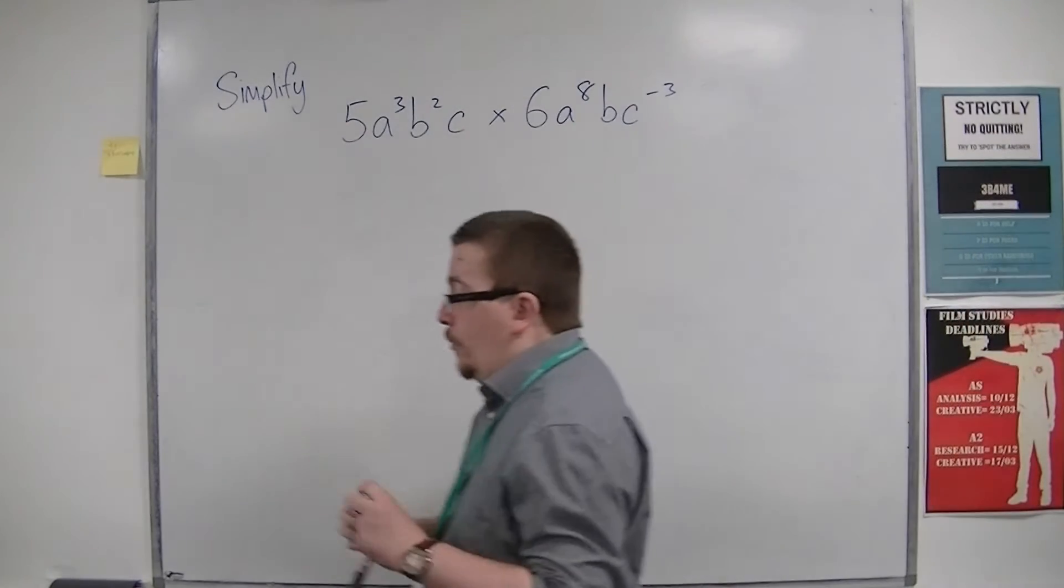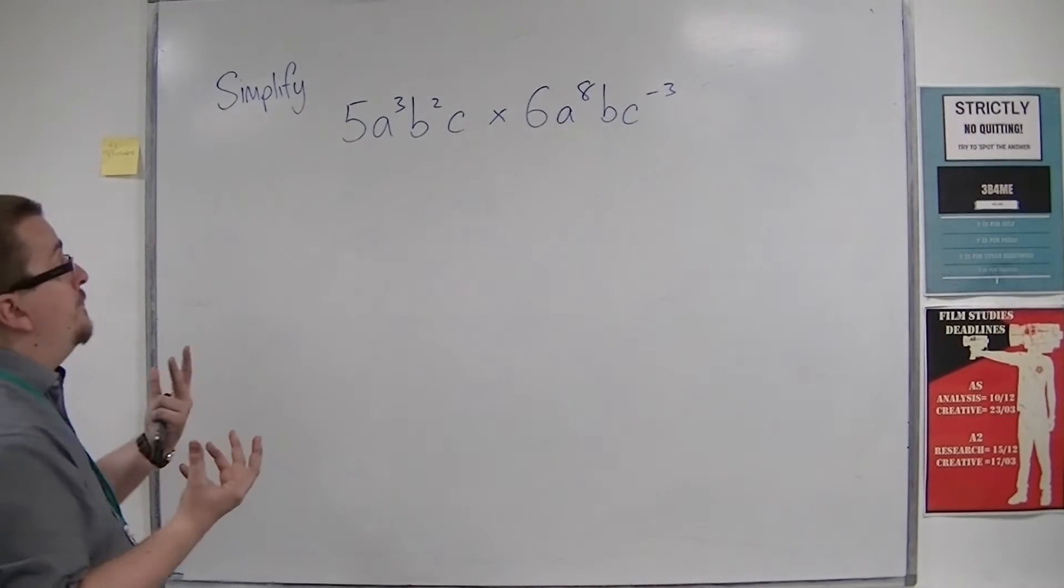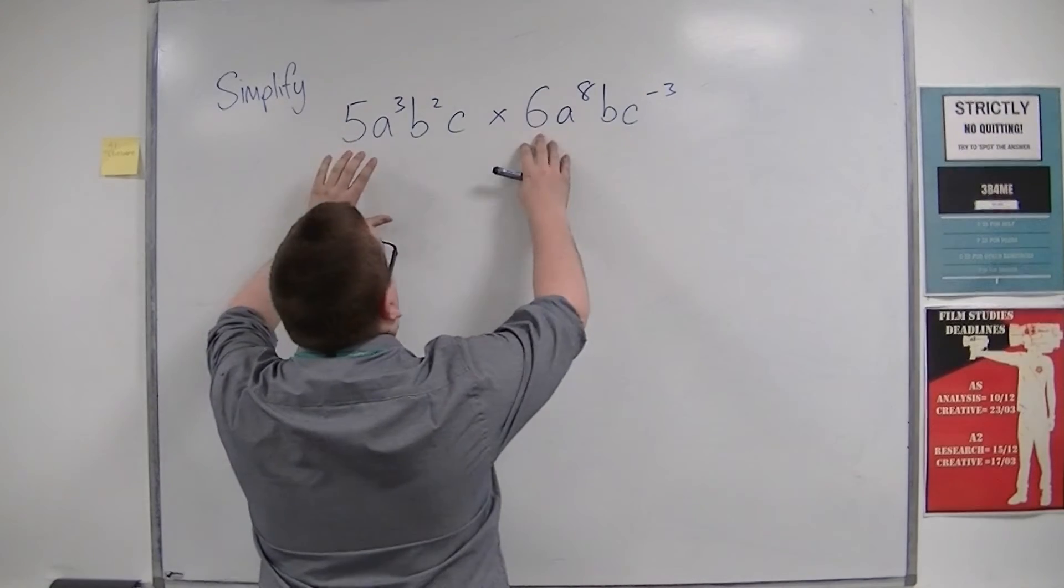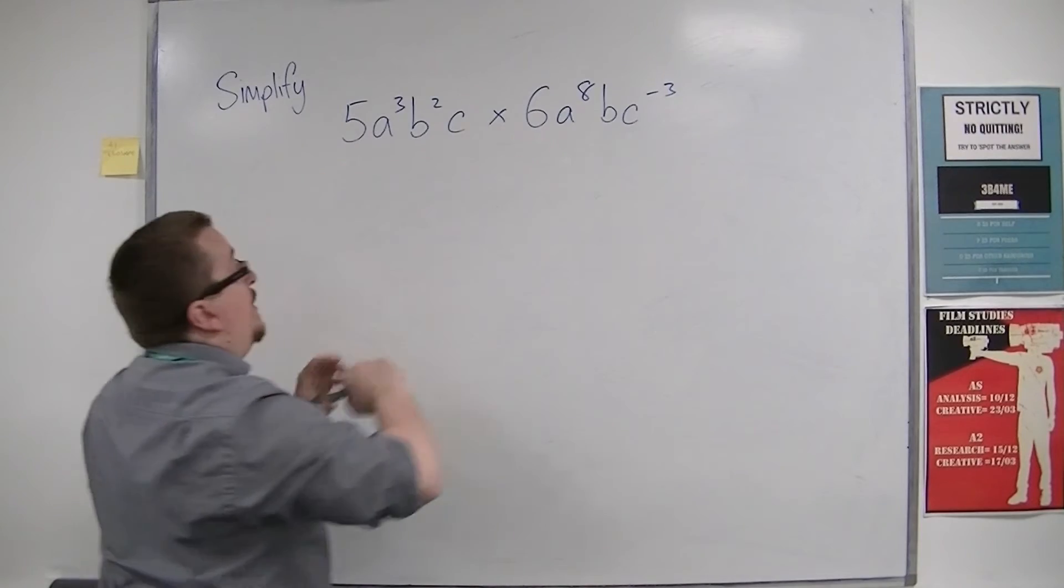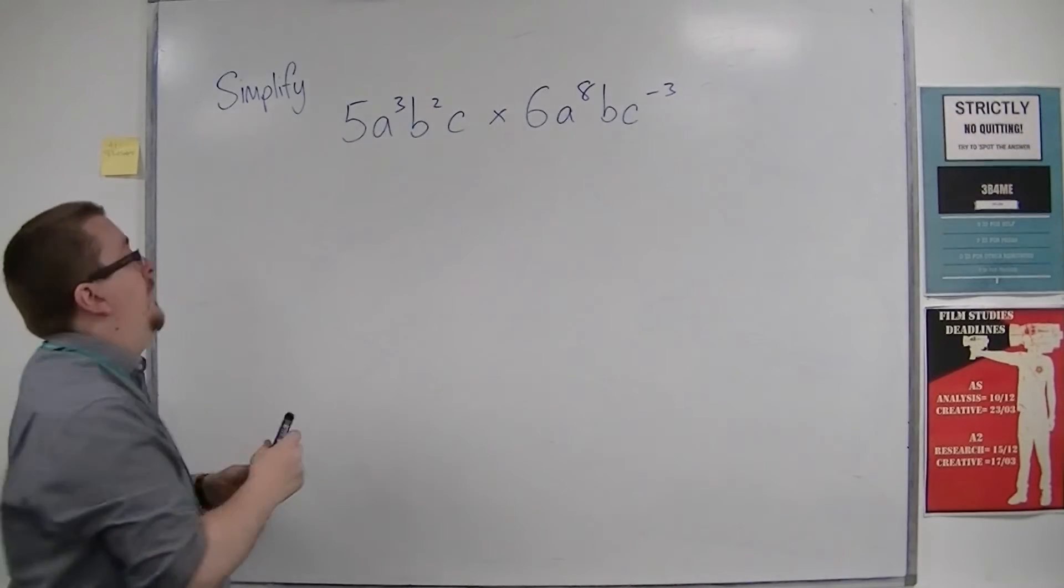What I like to do is take this in stages. Look at the numbers first, 5 times 6. Deal with those. 5 times 6 is 30.